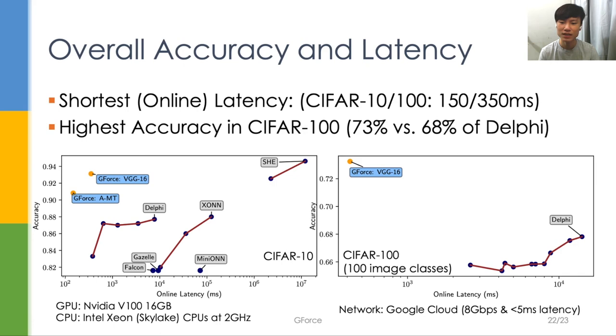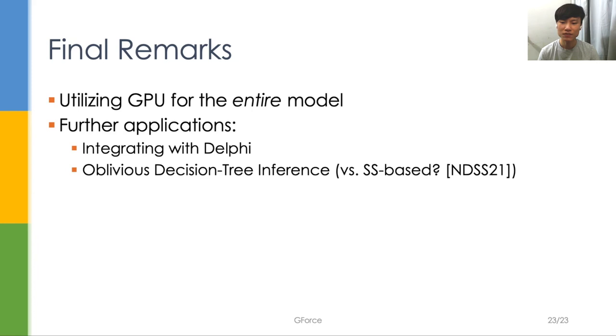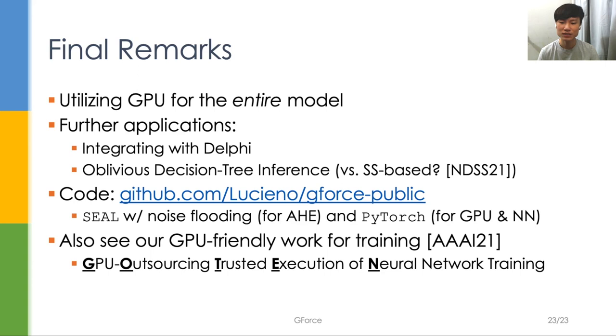To sum up, GeForce utilizes GPU for the entire model to gain superior performance. It's possible to integrate GeForce with Delphi to support oblivious inference for more complicated neural networks and datasets. Also, our work is applicable to oblivious inference using other machine learning techniques, say, decision tree inference. If you're interested, you may also check out our code on GitHub. Our team also has another GPU-friendly secure solution for neural network training. If you have any questions, please feel free to email us. Thank you.